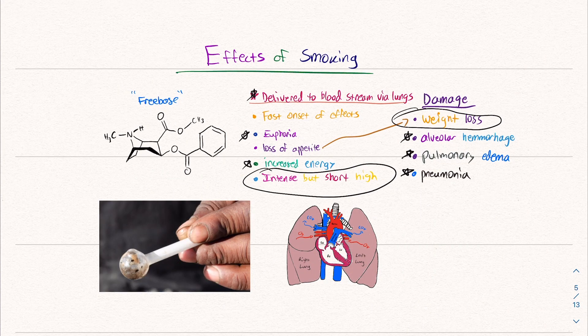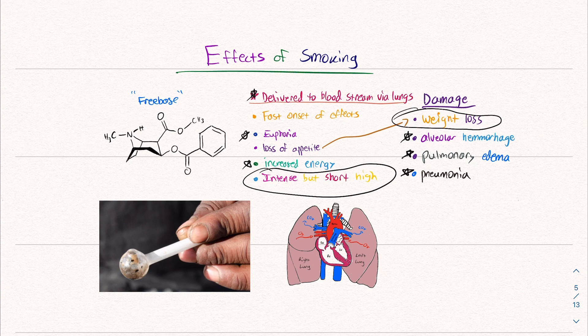Then the effects of smoking, euphoria, loss of appetite which can lead to weight loss, intense but short high. But then there's damage, alveolar hemorrhage, pulmonary edema, pneumonia, none of this stuff you want to go through at all.